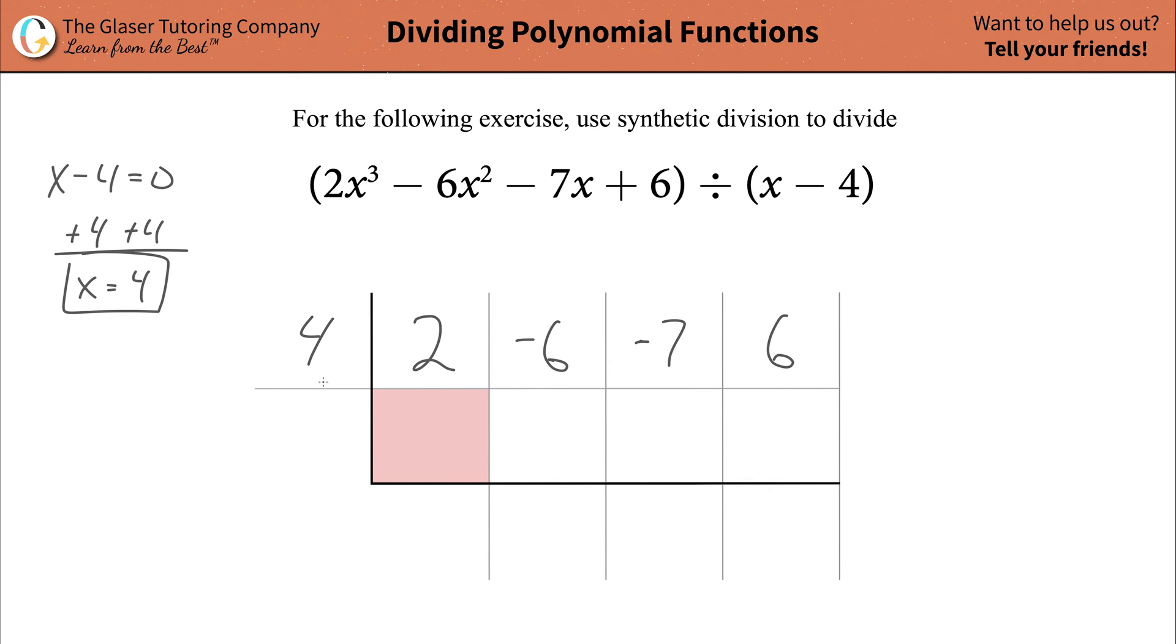Cool. Now, all we do once we have this table set up is follow a simple set of steps, aka algorithm, in order to find our coefficients down here for our quotient. First step: just simply drop down whatever first number you have here inside the synthetic division. It's going to be a 2. That's why I have a red box there.